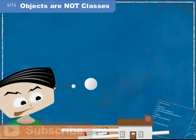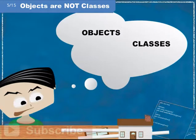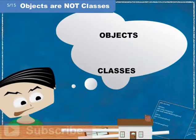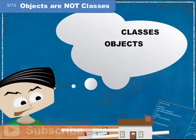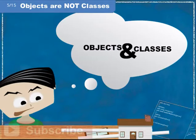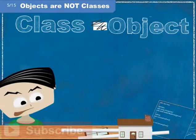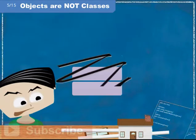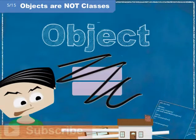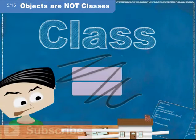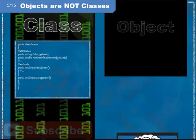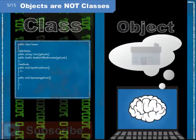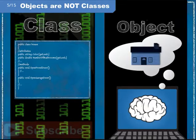When first exposed to the world of object-oriented programming, it is not unusual for beginning programmers to confuse the terms objects and classes. They are absolutely not the same thing, and the terms shouldn't be used interchangeably. A simple rule to help remember the difference is: a class lives in code, and an object lives in memory.